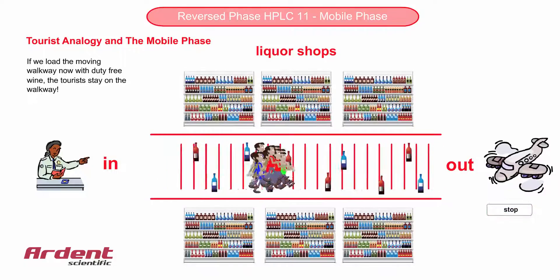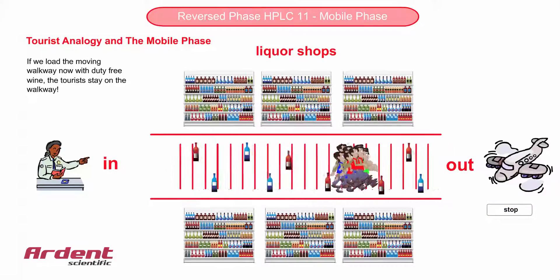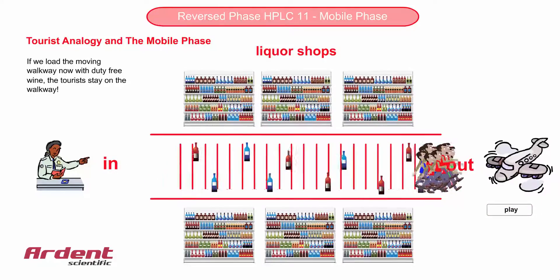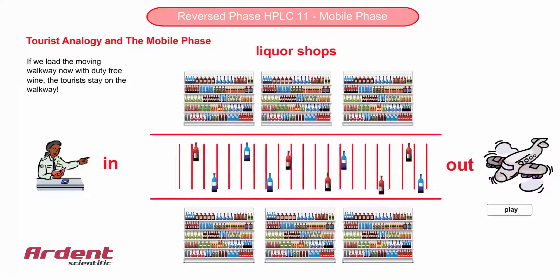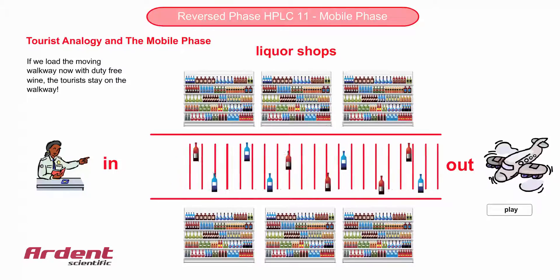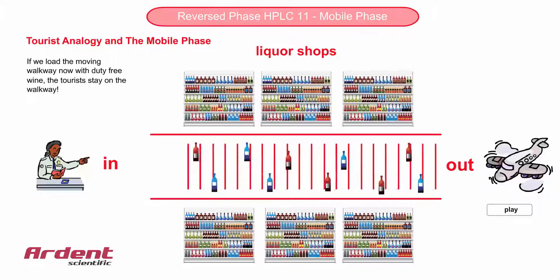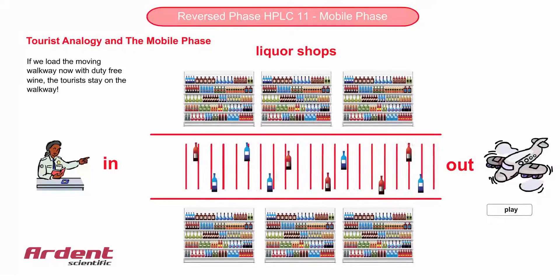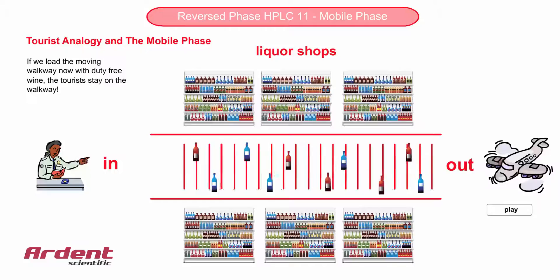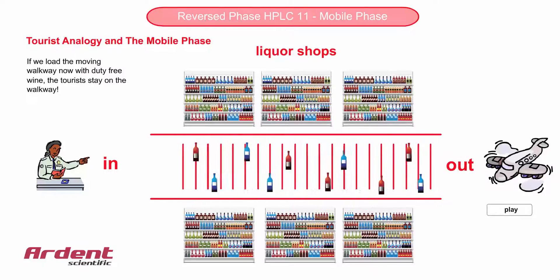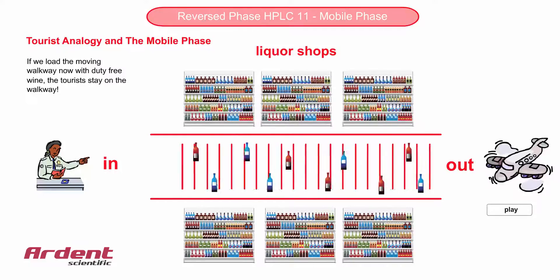So far we have only discussed the stationary phase, and this of course can only be modified by changing the column — an expensive and often time-consuming option. The power of HPLC, however, is the ability to change the mobile phase, and therefore change the separation.